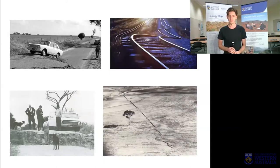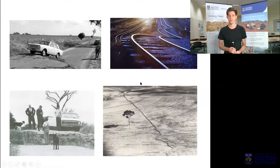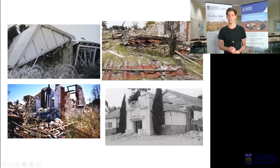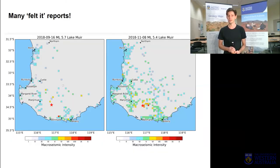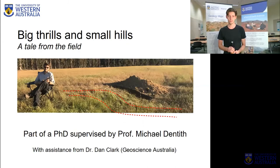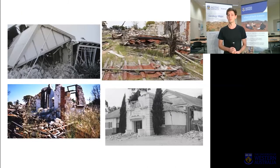Here are some photos of Meckering and the damage. You can see the highway was uplifted — dog for scale — and the railway tracks were bent quite considerably. The entire town was completely wiped out. If you can imagine that occurring in an area closer to Perth, the effects could be quite devastating.